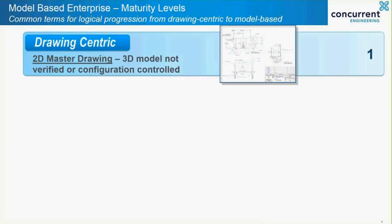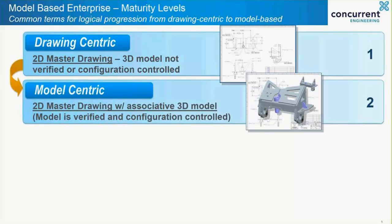Let's take a look at some maturity levels. The first level of maturity is drawing-centric. If you are not using a data management tool like PTC Windchill, this is probably where you are today. You will be using your CAD tool purely as a method to create a 2D drawing, which is then controlled as a separate business object, often in a manual, paper-based manner. The second level of maturity is model-centric. Here the 2D drawing is still the master when it comes to manufacturing, but it is stored and controlled alongside its associated 3D model in a data management system.